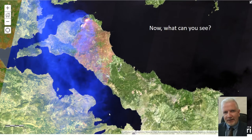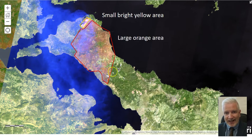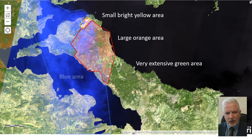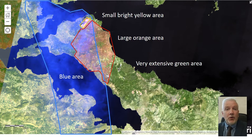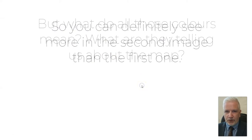Now what can you see? What are you looking at here? Well, you might notice up towards the north of the image there's a small red, bright yellow area. There's a large orange area. This area here is very extensive green. And then there's a blue area that seems to be fading out some of the stuff underneath. We don't yet know exactly what those colors represent, but they do tell us that we can definitely see more with the second image than we were able to with the first one.